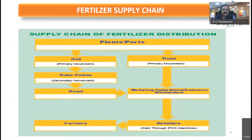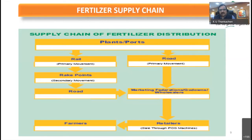From the plants and ports, rail and road movement takes place to the rake point or destination — this is called primary movement. From the rake point, material is moved by road to various go-downs of the marketing federation or wholesalers — this is called secondary movement.